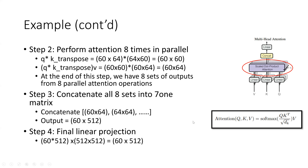Then what we do with that output is concatenate. We stack the eight results horizontally — eight tensors of 60 by 64 — so after concatenation we get 60 by 512 as the output. Then the final linear projection is applied: we take this concatenated output, apply a dense layer again, and get the output 60 by 512. That is the result of the multi-head attention.